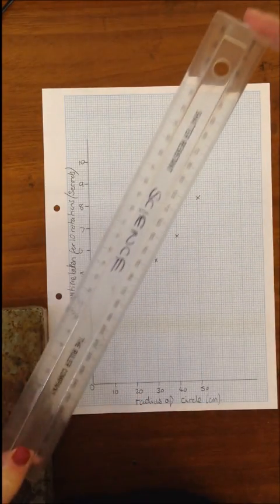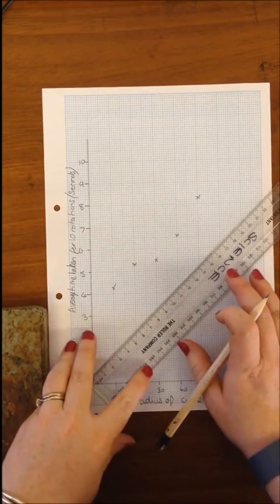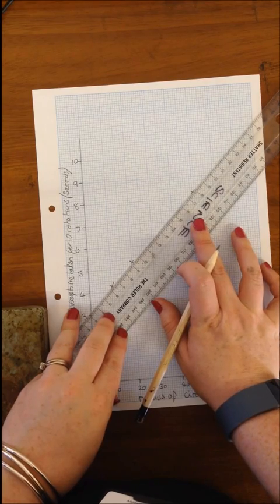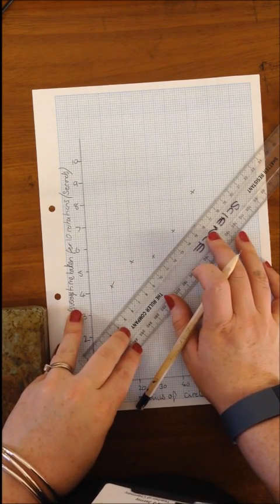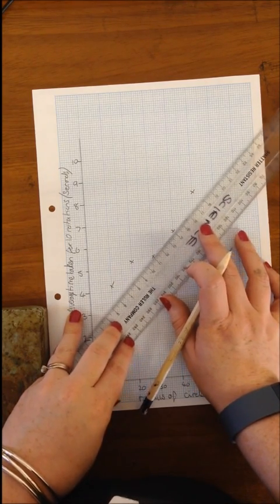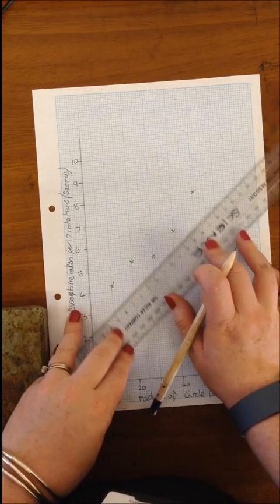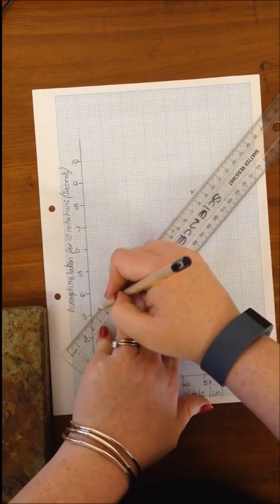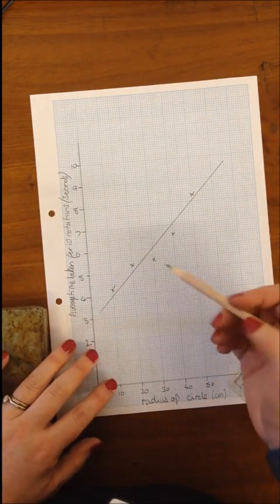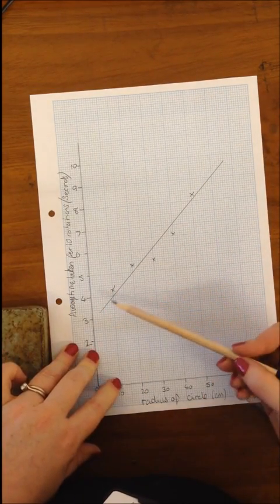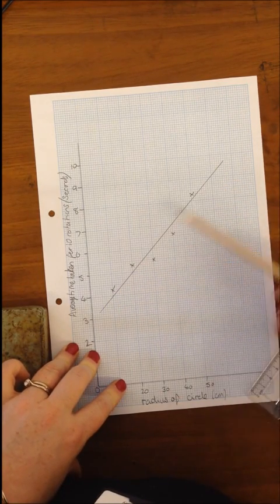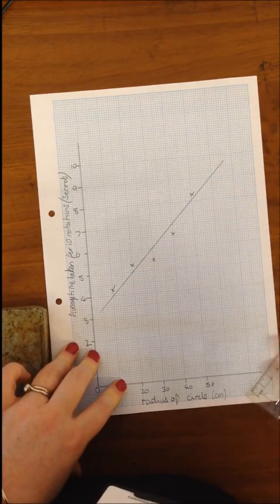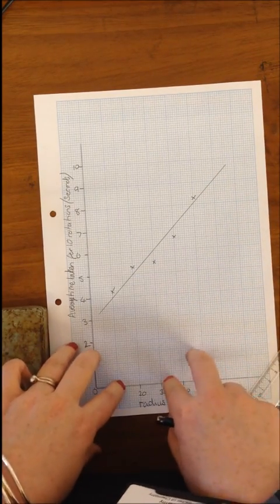I'm now going to use a ruler to draw my line of best fit. Now, when you're drawing your line of best fit, what you need to do is to try and get it going through most of the points. It doesn't have to go through all the points. If you think there's an anomaly, you should leave it out. But I am going to draw my line going through there like that. So, it's nice and evenly spread between the five points. I've got three points on this side, two points on this side. All the points are roughly the same distance away from the line.